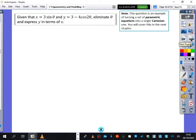So here I've got, it says given that x equals 3 sine theta and y equals 3 minus 4 cos 2 theta, eliminate theta, which means remove theta, and express y in terms of x. We want it to be a y equals.